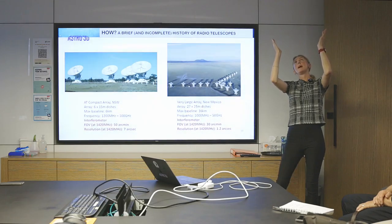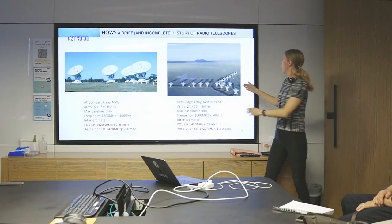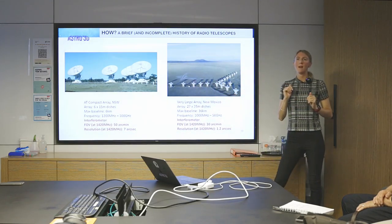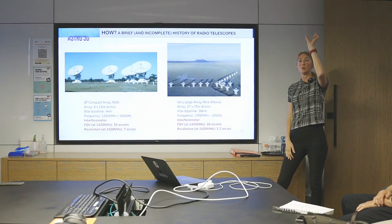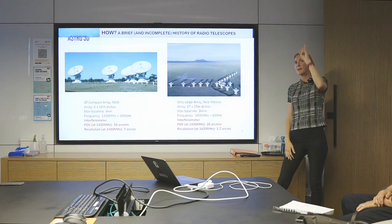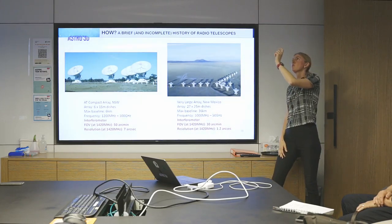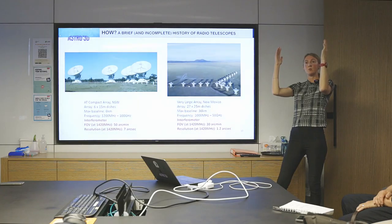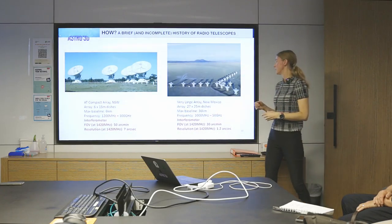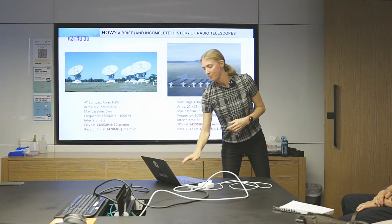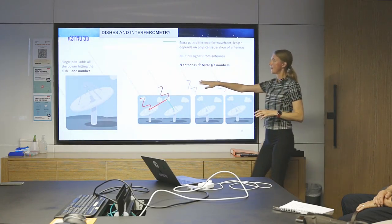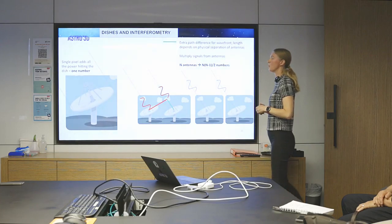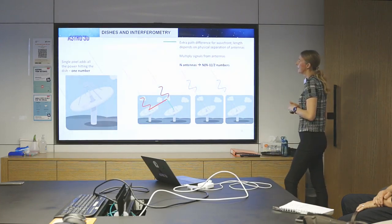And I'll show a diagram in a minute as to what's happening here. But effectively what you can do with an array is that your field of view of the sky is set by the dish size. So you might see a large field of view on the sky. But the distance between your maximum, the maximum distance between your two antennas sets the resolution on the sky. So instead of just having one number now, you get a set of numbers at some resolution set by the side of your dish. And this is why we have interferometers.